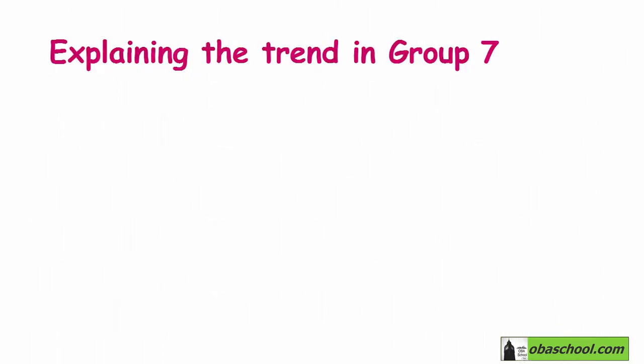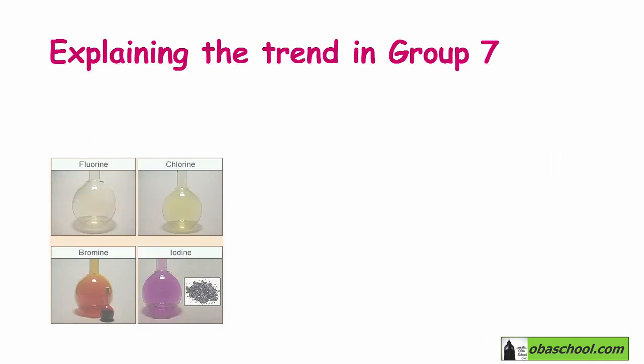Now we will explain the trend in Group 7. These are the elements of Group 7 which are known as halogens.